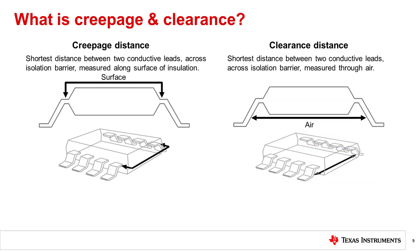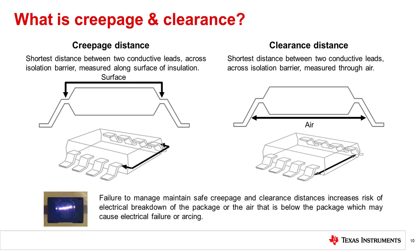Both of these parameters are important because when an electric field is present across the isolator, electrical breakdown of either the package or of the air below the package can cause electrical failure or even arcing. Selecting the right creepage and clearance for the design environment and end use case is critical. Minimum creepage and clearance distances are defined by the IEC standards bodies as guidance intended to prevent air arcing during operation.